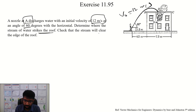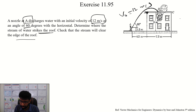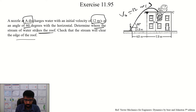The stream will clear the edge of the roof. This is the roof edge as required. If the stream just clears the roof, it will take place; if it does not touch the roof, it will also take place. You can check that the stream will clear the edge of the roof. If you look at the same size of the roof, you can see where the stream of water strikes.